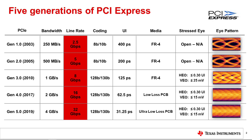Even with lower loss material and advanced device level equalization, the need for in-channel PCIe signal conditioning continues to grow. For the first time in PCIe, Gen 4 signal conditioning functions have been written directly into the base PCIe specification. There are two types of signal conditioning functions used in PCIe systems: a protocol-aware retimer, and a protocol-agnostic linear repeater.